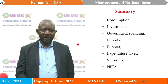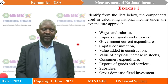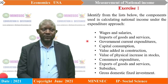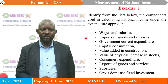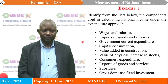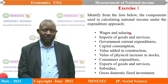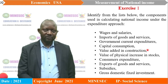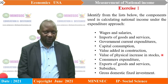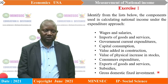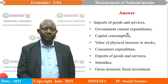Exercise: identify from the list below the components used in calculating national income under the expenditure approach. Wages and salaries belong to the income approach, not expenditure. Imports of goods and services — expenditure. Government current expenditure — expenditure. Capital consumption — applicable to all approaches. Value added in agriculture — output approach. Value of physical increase in stocks — expenditure. Consumers expenditure — expenditure. Export of goods and services — expenditure. Subsidies — expenditure. Gross domestic fixed investment — expenditure.